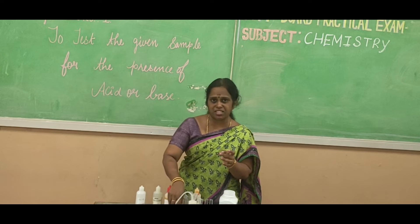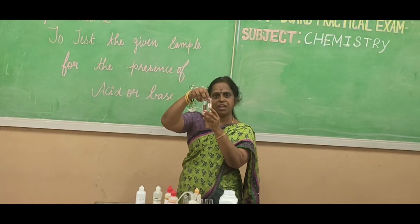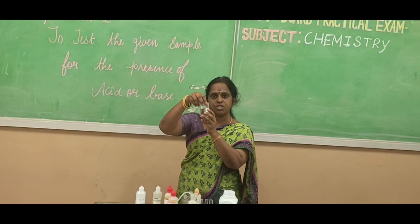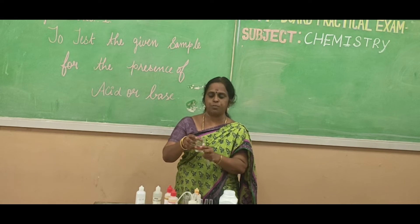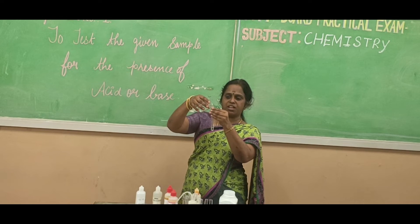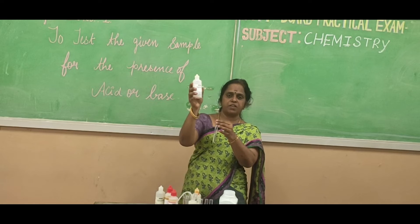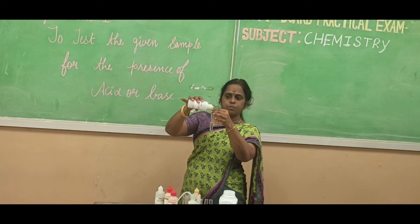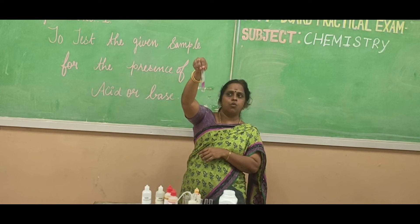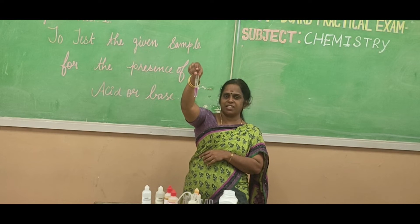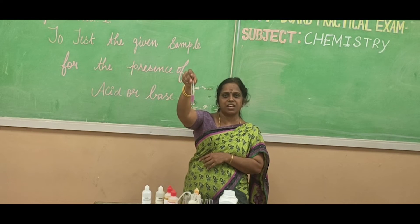Now I am going to test the next solution, labeled as A. In a similar way, I will use the three indicators to test whether this given solution is a base or an acid. I take a test tube and add 5 ml of the given solution. I add the first indicator — phenolphthalein. A few drops of phenolphthalein are added. What do you observe? You observe the solution turns pink in color. This confirms the presence of base — the given solution is a base.